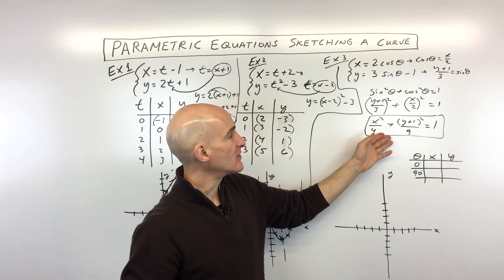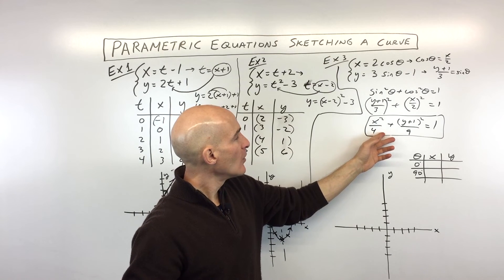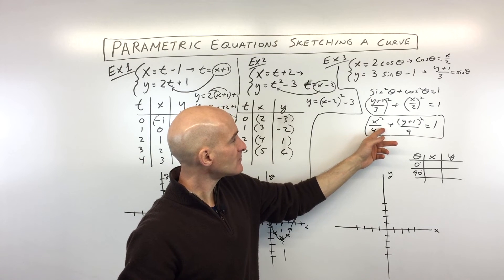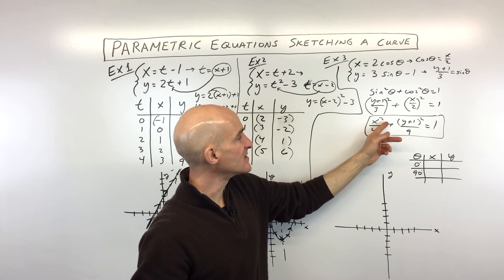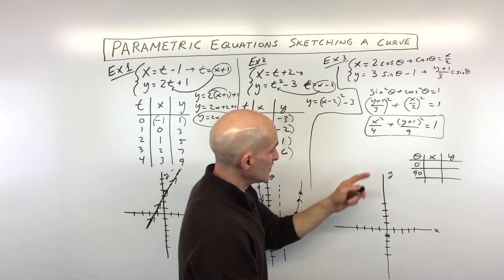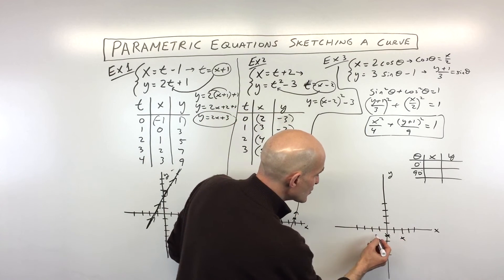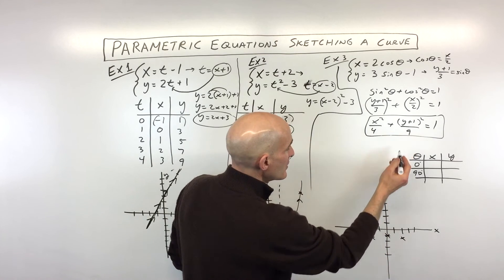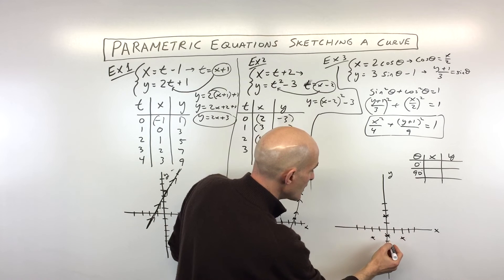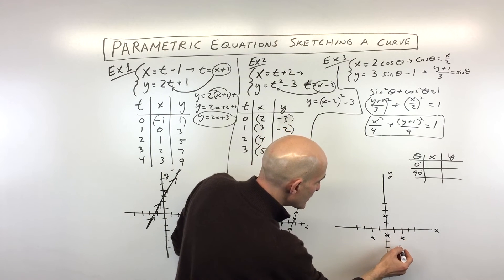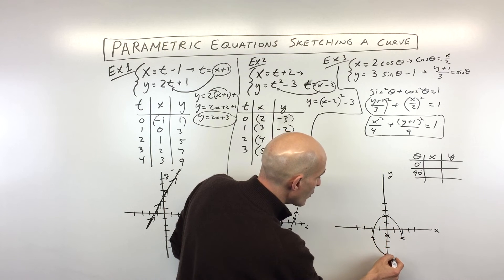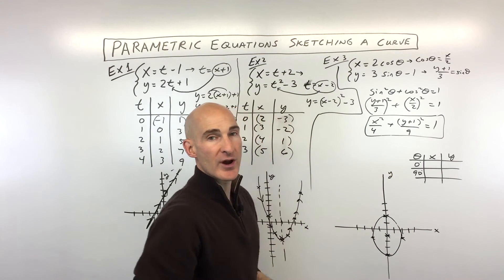Now, the graph that this equation represents, well, you can see that it's an ellipse. And the center of the ellipse over here is going to be at zero, negative one. So that's going to be zero down one. And you can see we're going two in the x direction, square root of four is two. We're going three in the y direction. One, two, three. One, two, three, and one, two, three. So now you can see that this is an ellipse, a little bit more elongated in the vertical direction, the y direction.